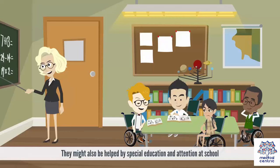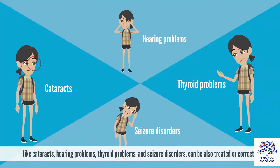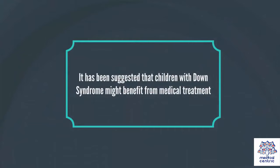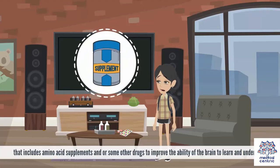They might also be helped by special education and attention at school. Some medical problems common in people with Down syndrome — like cataracts, hearing problems, thyroid problems, and seizure disorders — can be treated or corrected. It has been suggested that children with Down syndrome might benefit from medical treatment that includes amino acid supplements and other drugs to improve the ability of the brain to learn and understand.